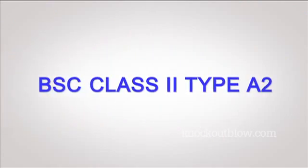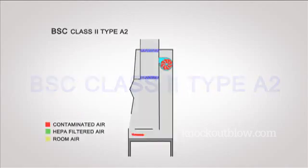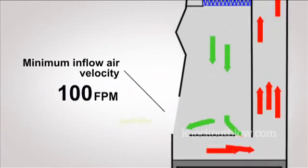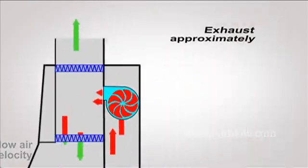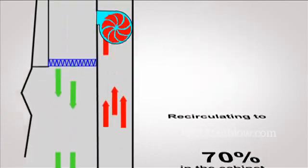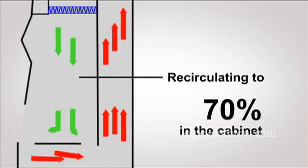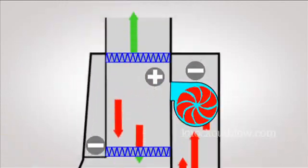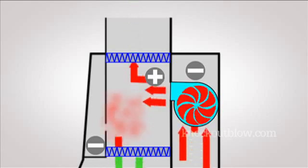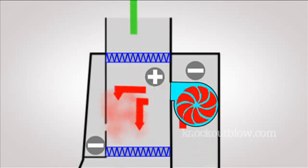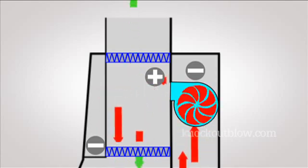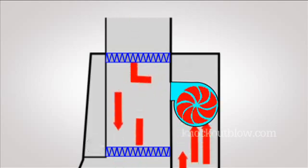BSC class 2 type A2 have a minimum inflow air velocity of 100 feet per minute through the front opening with an exhaust approximately 30% of the total air handled and recirculated to 70% in the cabinet. There is negative pressure or surrounding negative pressure in the ducts and plenums to contain the biologically contaminated air in order to protect the environment if there are any leaks at the exterior surface of the BSC from IATs or BSAT.